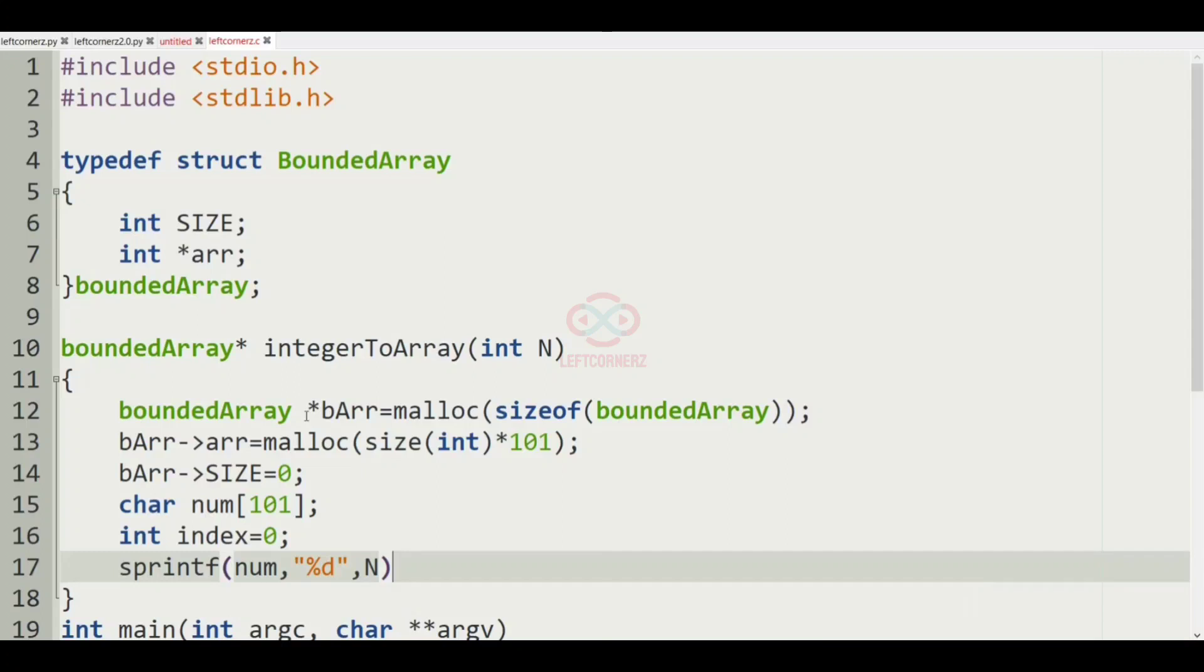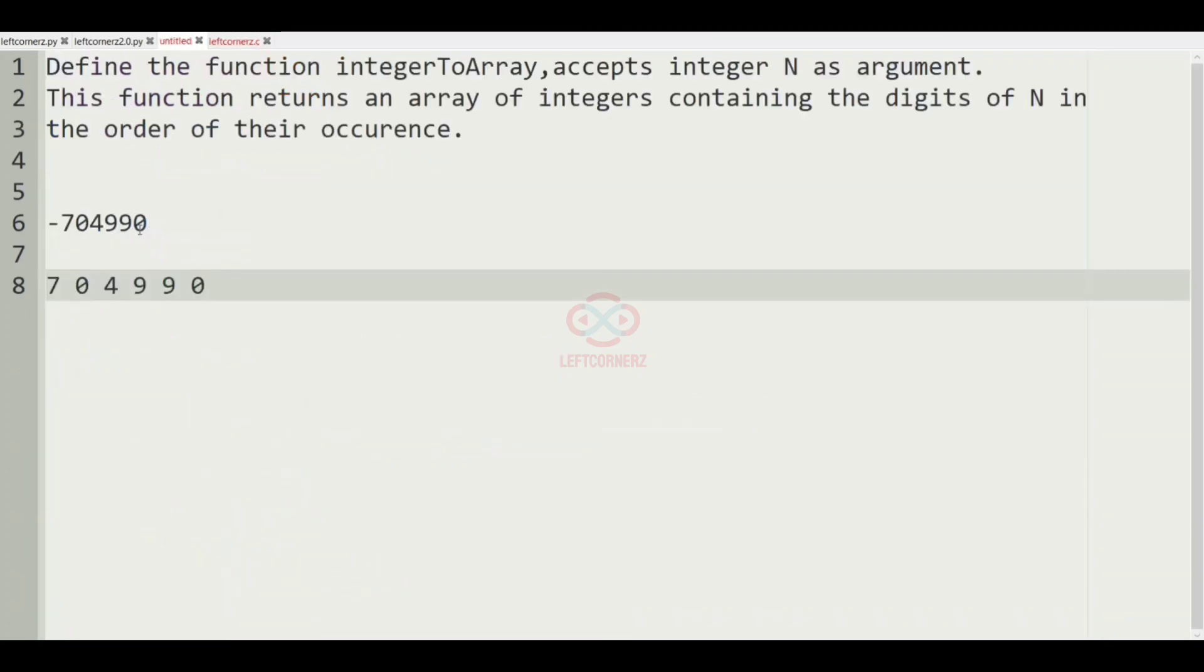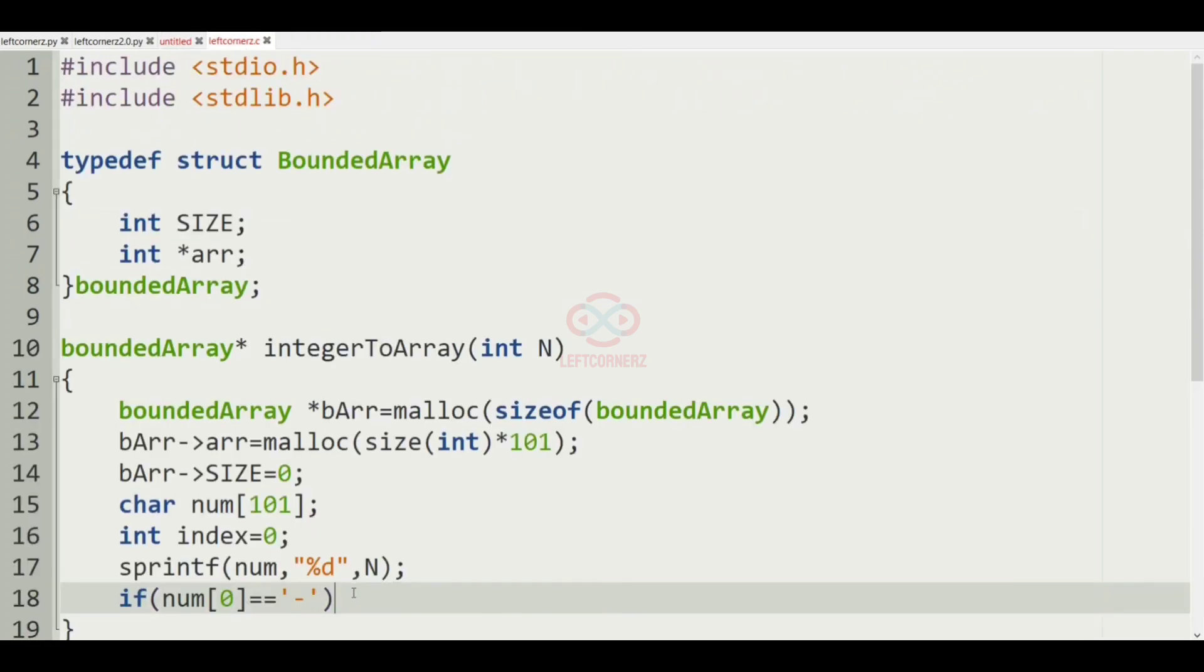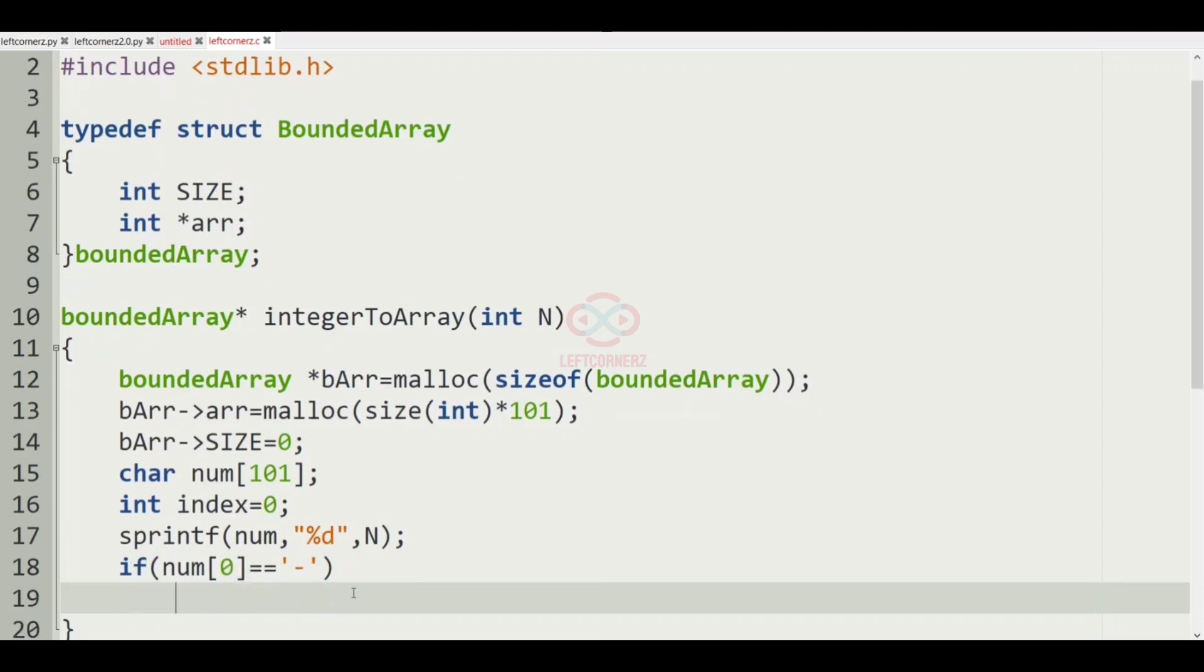And we'll have to use sprintf num, %d, N. And then we have if the num[0] is equal to minus, that is in this test case we're leaving it, right?